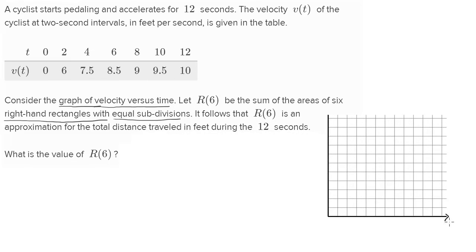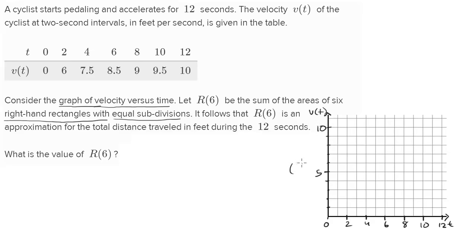This is the time axis, and this is the velocity as a function of time axis. Time goes between 0 and 12, and they're giving it to us every 2 seconds. So this is 0, 2, 4, 6, 8, 10, and 12 seconds. Our velocity goes between 0 and 10 feet per second. I'll mark off 1, 2, 3, 4, 5, 6, 7, 8, 9, 10. This is in feet per second, and the time axis is in seconds.